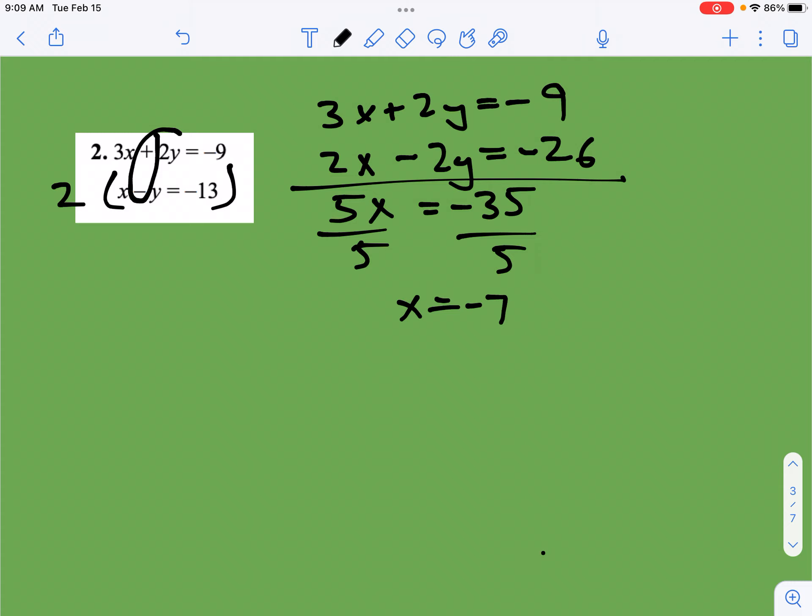Let's put that in our bottom equation. So we have negative 7 minus y equals negative 13. So let's move that negative 7 by adding it to both sides. So you get negative y is equal to negative 6. And then just to tidy this up, let's multiply the whole thing by negative 1. We get y is equal to 6. So I should have the point negative 7, 6.